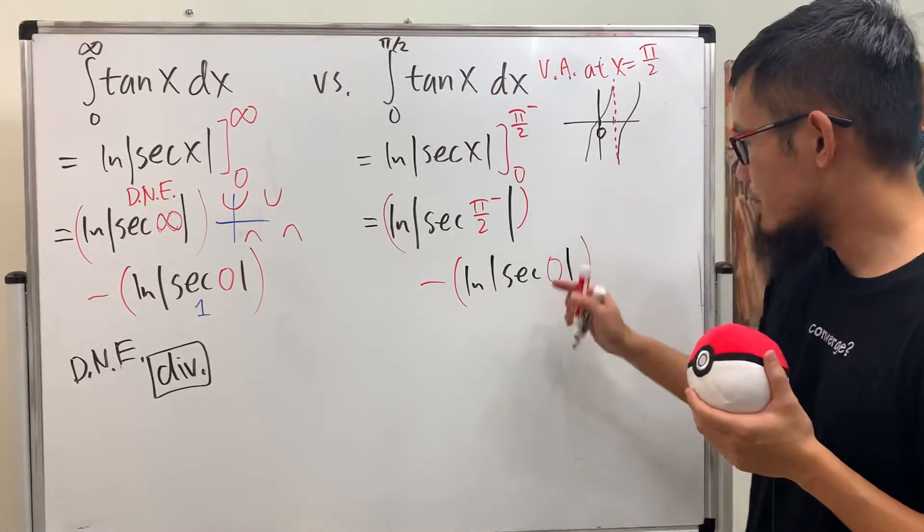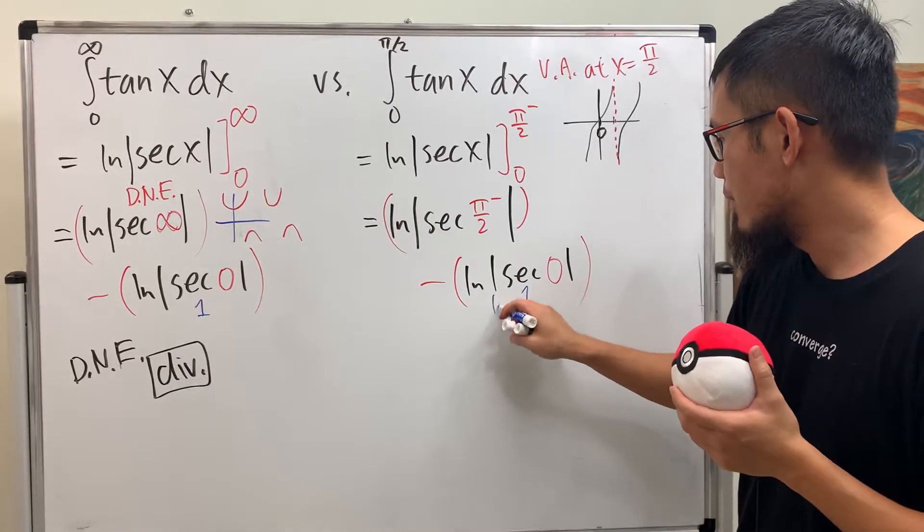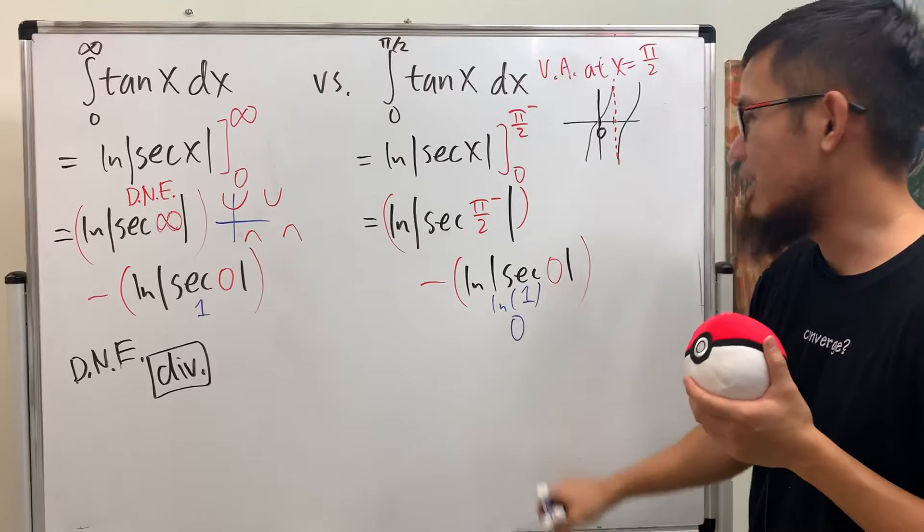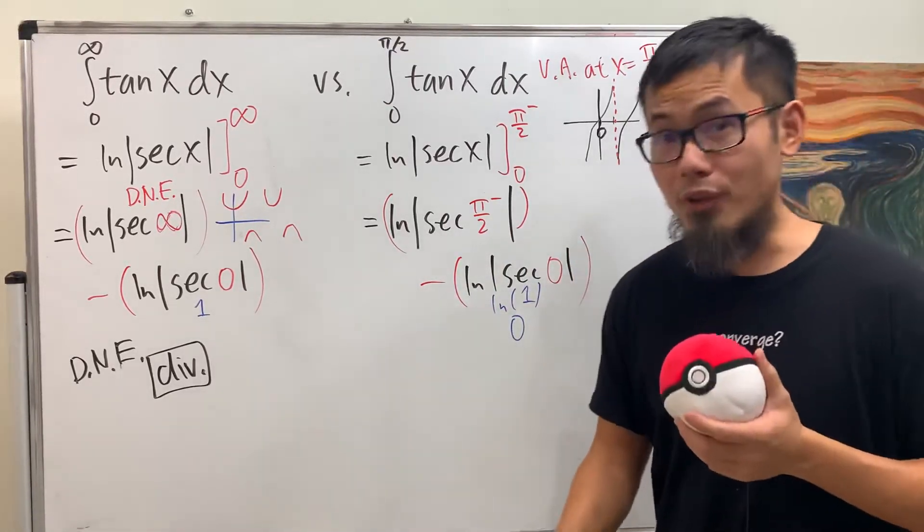All right. This is 1. ln 1 is 0. So all in all, this is just 0. That's nice. But the question is,